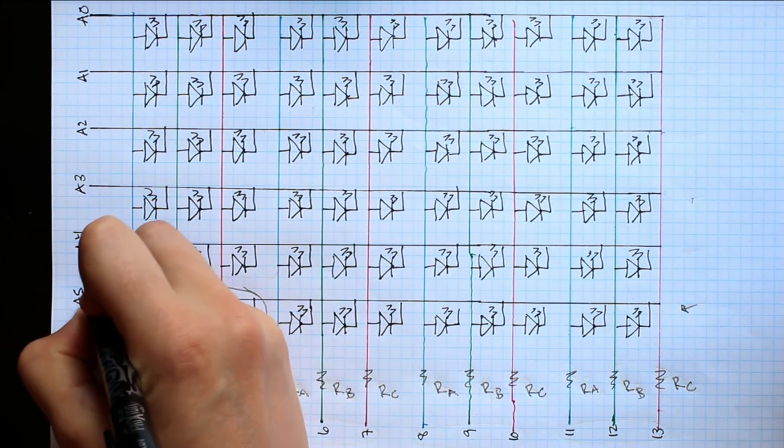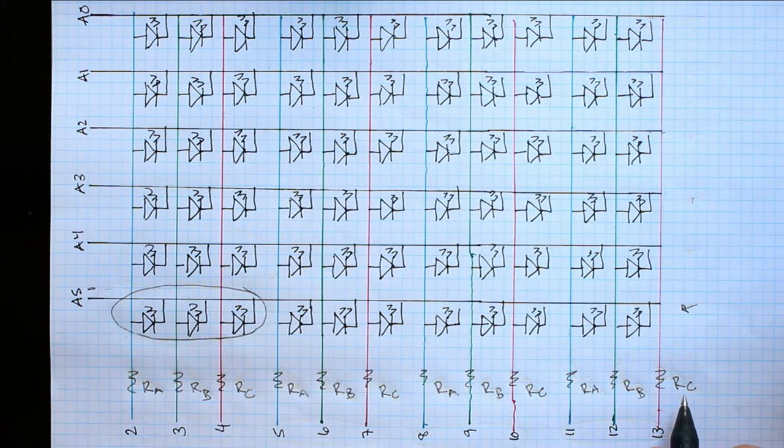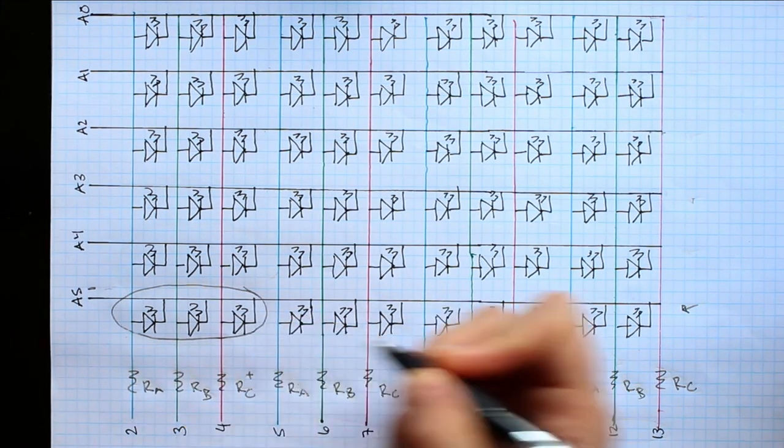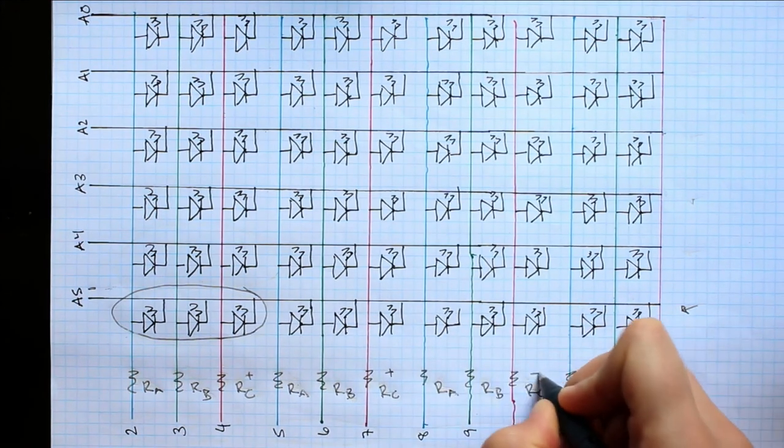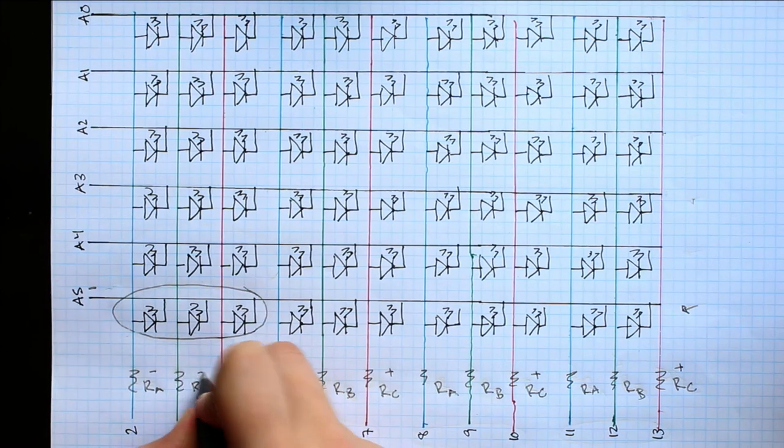So in this case, this is going to be low in order for an LED to be on, and then the desired LED combination will be high. For example, if you wanted a red row, then this would be high, this would be high, this would be high, and this would be high. And the rest of these would be set to low.